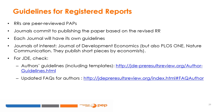For the last tool in the toolbox — the ultimate one — the RR: RRs are peer-reviewed PAPs. In other words, a PAP is an RR before it is submitted for review. Once it goes through the review process, the PAP becomes an RR. Journals usually commit to publishing the paper based on the revised RR. Journals will only ask for revisions if the RR is above the bar. Each journal will have its own guidelines on how to write the RR. Here is a list of journals of interest to researchers in economics and the social sciences that have an RR track for publication.